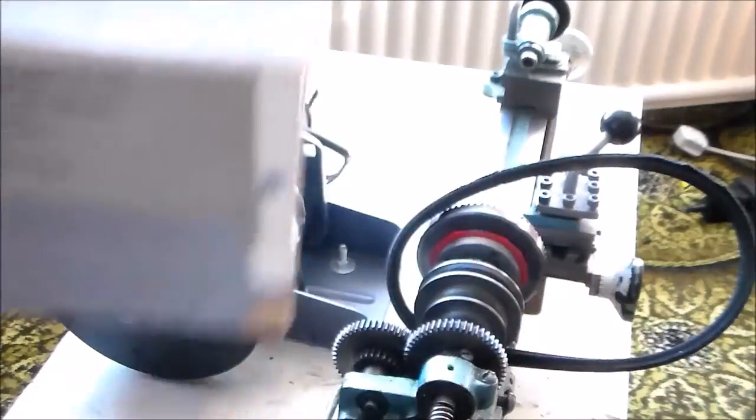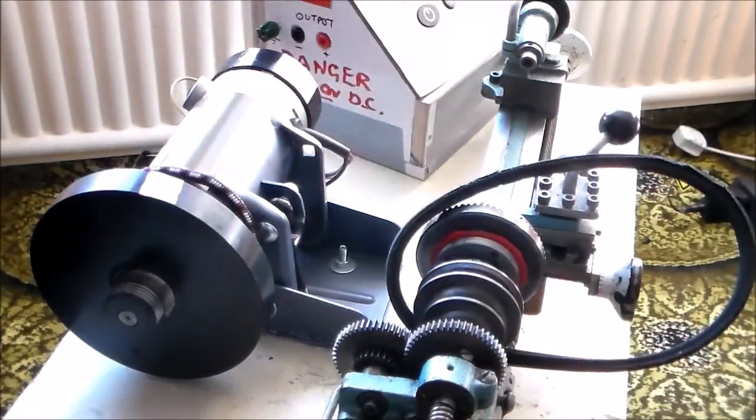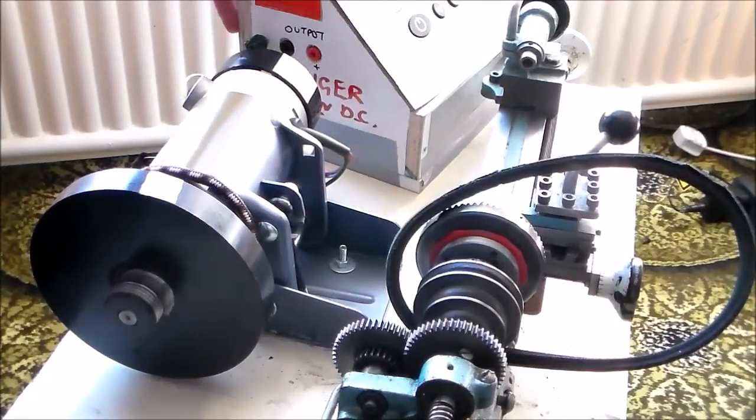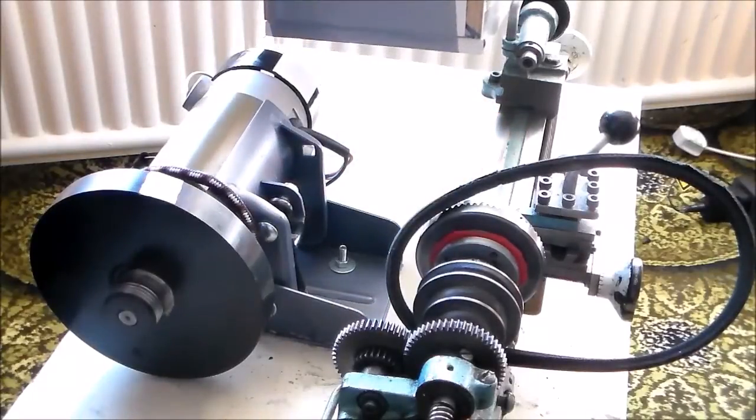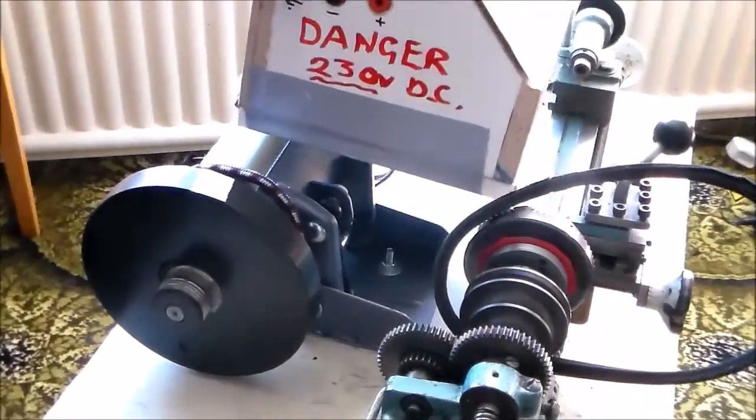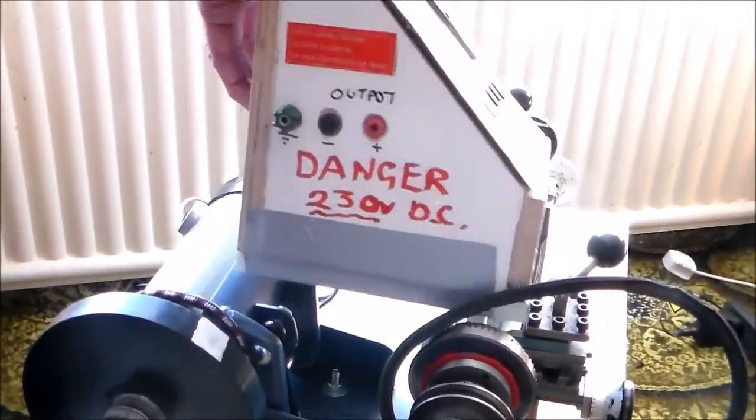Inside this box here, I've been able to put all the electronics, the speed controller salvaged from the treadmill. Rather than having the wires connected permanently, there's an earth terminal there, and then the positive and negative outputs are on there.